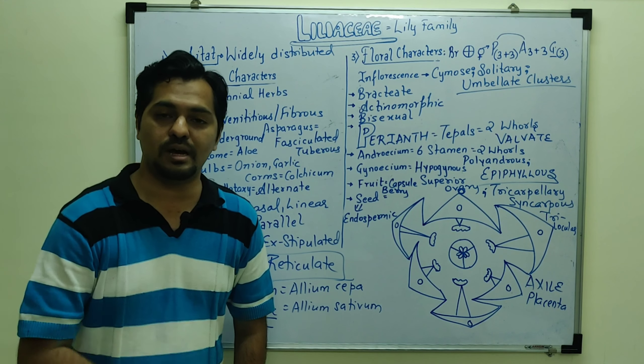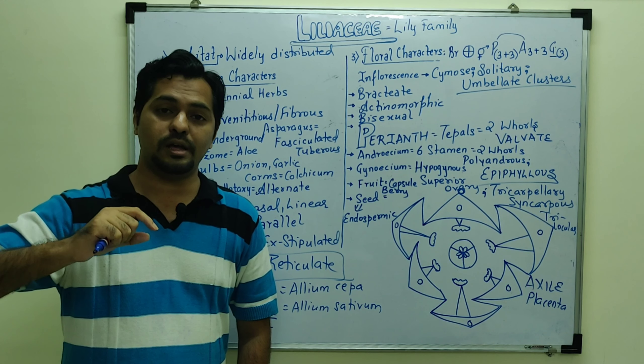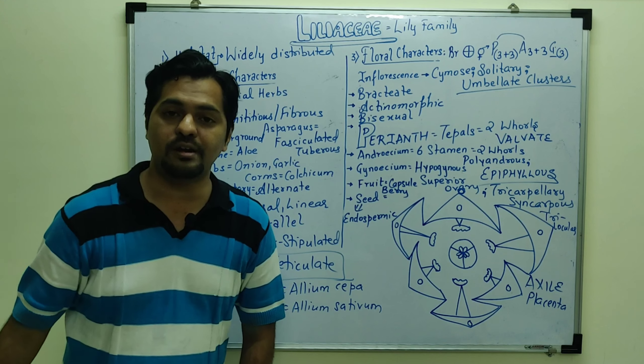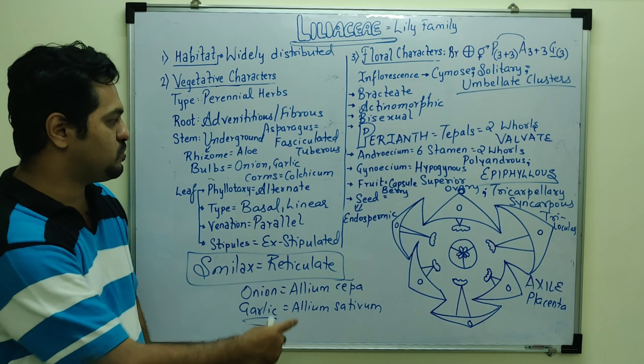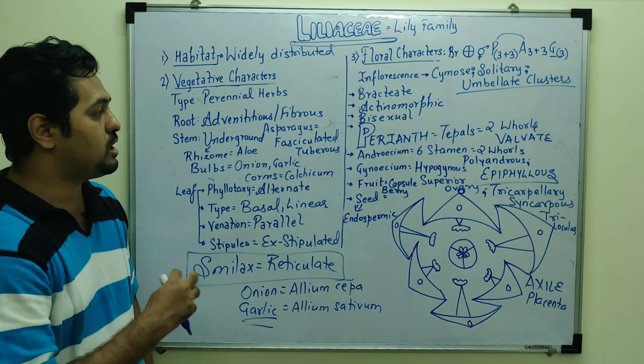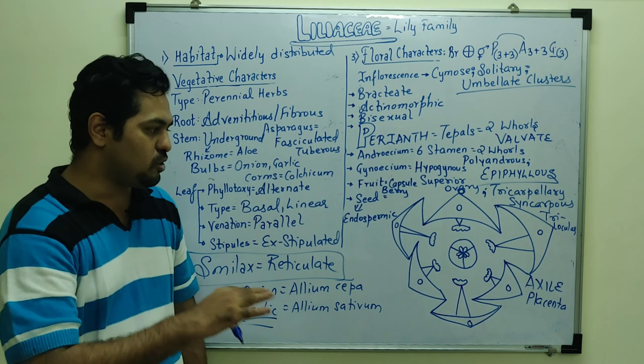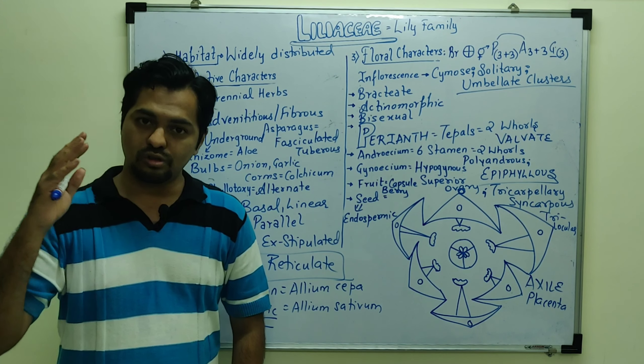And apart from that, there are ornamental plants like lily, tulip. Apart from that, the important plant is colchicum, which has colchicine, a substance which is used in plants to induce polyploidy. And in mutation, polyploidy discussion, polyploidy formation, polyploid plants, colchicine is used because it is a spindle arrester, spindle poison. So these are important members of the lily family.